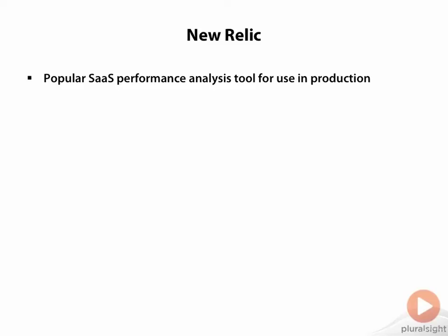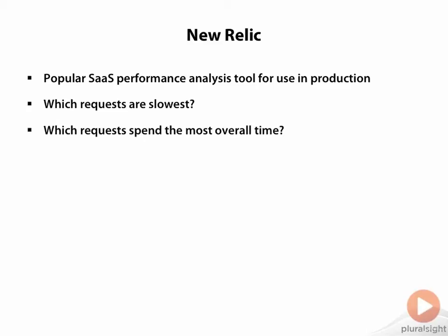There is a ton of information it will give you. Just a couple of examples: which requests are the slowest on average, and which requests spend the most overall time. The difference is that the slowest requests are the ones whose average time is the longest, but the ones that take the most overall time might actually have a very fast average time but be hit so frequently that you would want to improve their performance anyway, because they're the requests taking up time on your servers that prevents the servers from handling other requests. Another thing New Relic can do is when there is a SQL call that's slow, it'll run a SQL EXPLAIN on that call on the production machine and you can see the explain results in the New Relic dashboard.